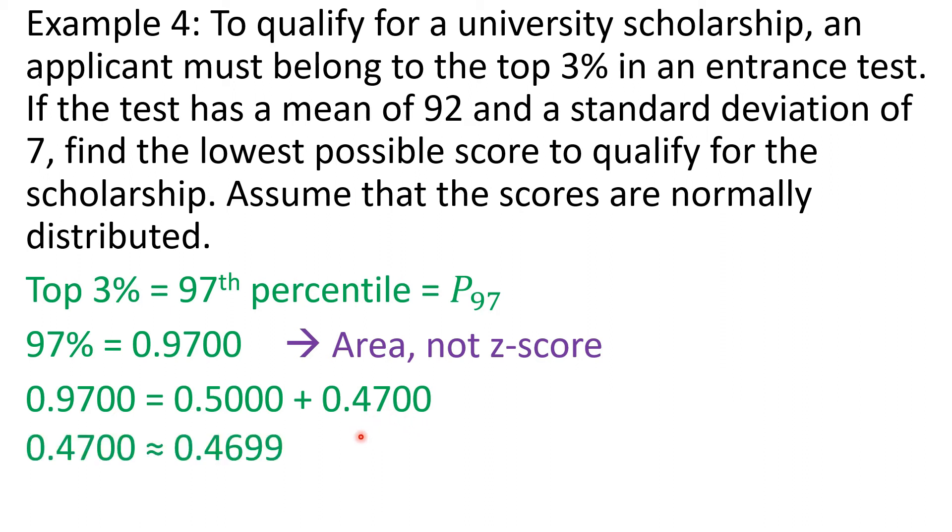Next, from the z-table, you are going to locate 0.4700. Again, this is not a z-score. So you will not look for it in the first column and in the first row because this is not a z-score. You will look for it in the cells, among the many cells. If you try to look or to search for 0.4700 in the cells, what you will find is 0.4699. Their difference is only 0.0001. So that pertains to this area as well. And the z-score equivalent to 0.4699 area is z is equal to 1.88.